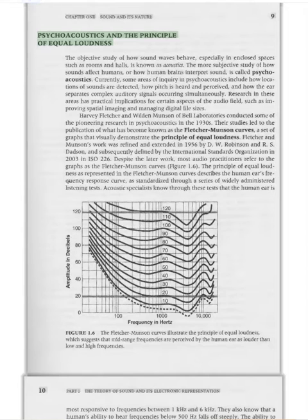Psychoacoustics and the Principle of Equal Loudness. The objective study of how sound waves behave, especially in enclosed spaces such as rooms and halls, is known as acoustics. The more subjective study of how sounds affect humans, or how human brains interpret sound, is called psychoacoustics. Currently, some areas of inquiry in psychoacoustics include how locations of sounds are detected, how pitch is heard and perceived, and how the ear separates complex auditory signals occurring simultaneously. Harvey Fletcher and Wilden Munson of Bell Laboratories conducted pioneering research in psychoacoustics in the 1930s. Their studies led to the publication of the Fletcher-Munson Curves, a set of graphs that visually demonstrate the principle of equal loudness.